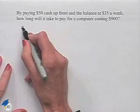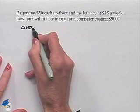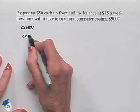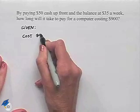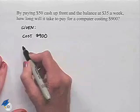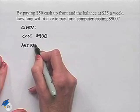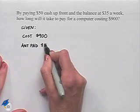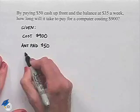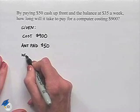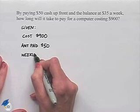Let's write down the information given in the problem. We know the original cost of the computer is $900. We're going to make an upfront payment of $50, and then we'll pay $35 weekly.